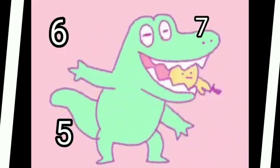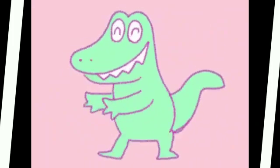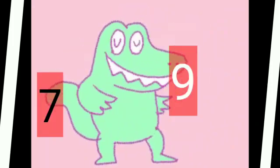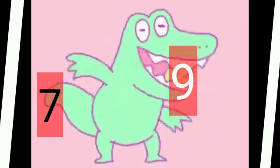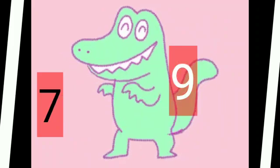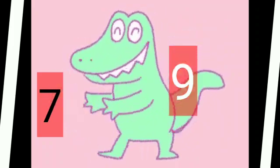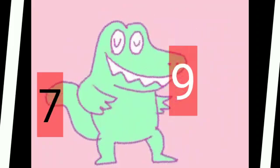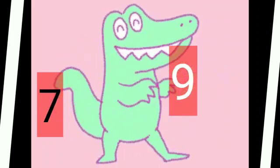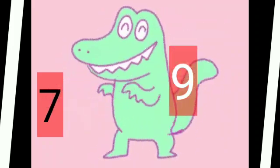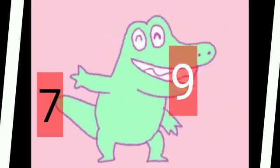This alligator lives in a number farm. He eats numbers. He has two numbers: seven and nine. But the alligator always likes to eat the greater number. So his mouth opens to nine.